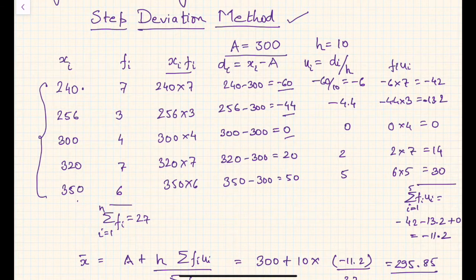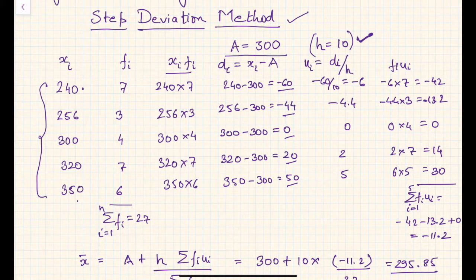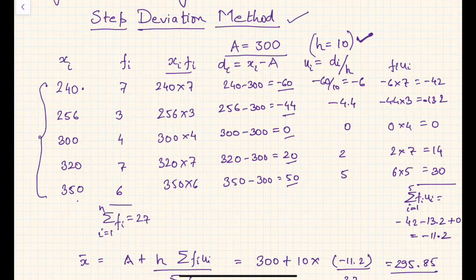Now one step further: we assume another value h — let's say 10 — and we divide all the di's by this value h. Division by 10 will be easier; you can also choose multiples of 20 or hundreds depending upon the case. In this case I just want single-digit numbers, so I have divided all the di's by h to further reduce those values.